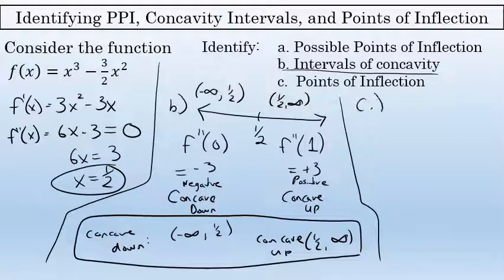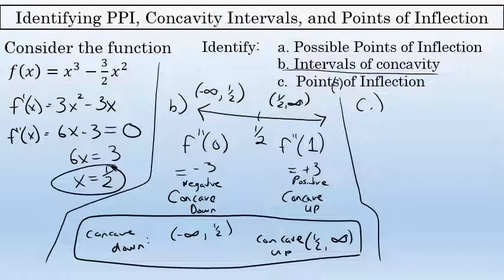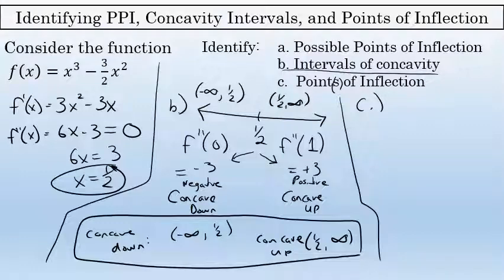Part C is asking for the points of inflection. Some functions have one, some have more than one, some don't have any. But this one does have a point of inflection. We found a possible point of inflection at x equals 1 half, and it is a point of inflection because the graph changed concavity — before x equals 1 half it's concave down, and after 1 half it's concave up. A point of inflection is any point where the graph changes concavity, either from concave up to concave down or from concave down to concave up.